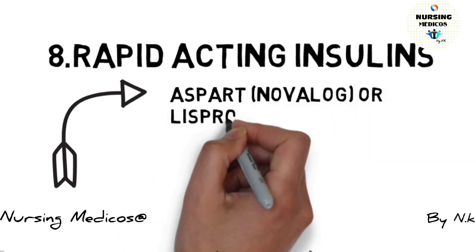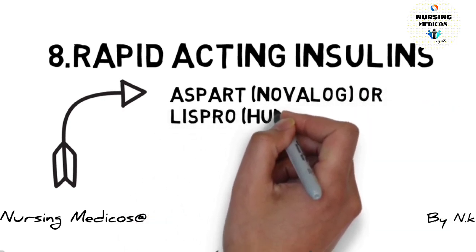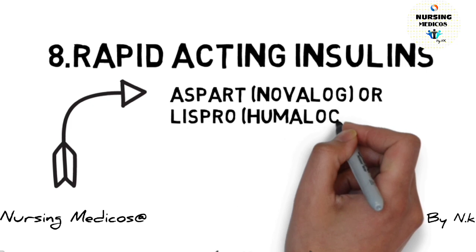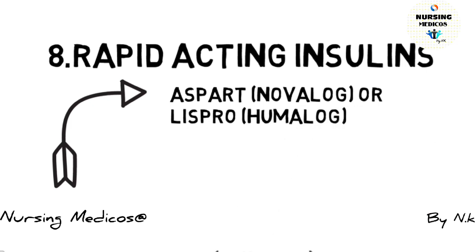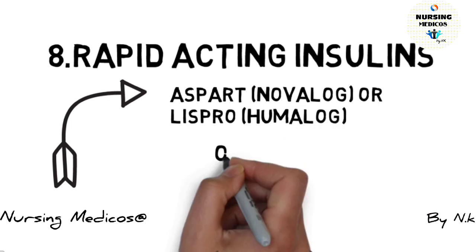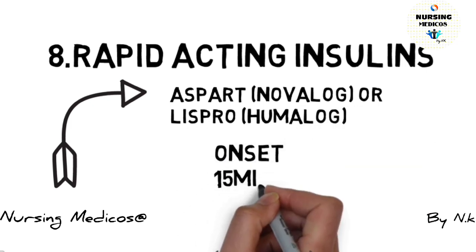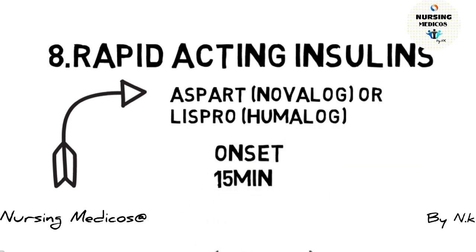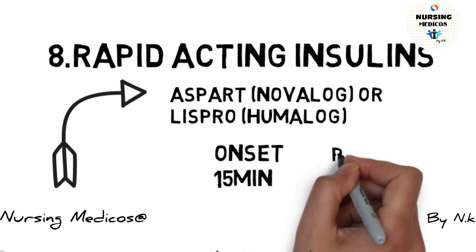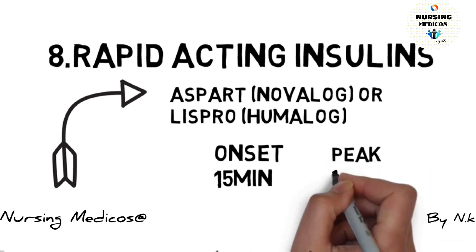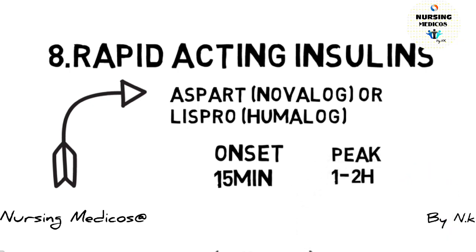Eighth one is rapid acting insulin, that is Novolog or Humalog. Onset is 15 minutes, and peak time is 1-2 hours.